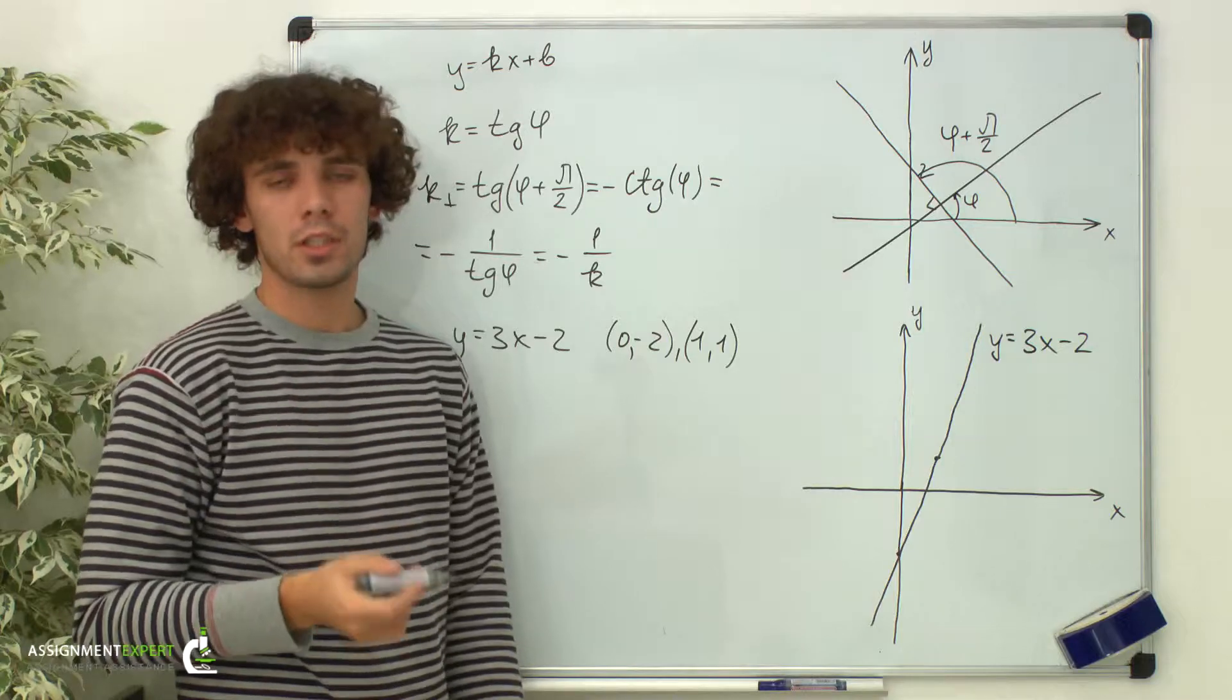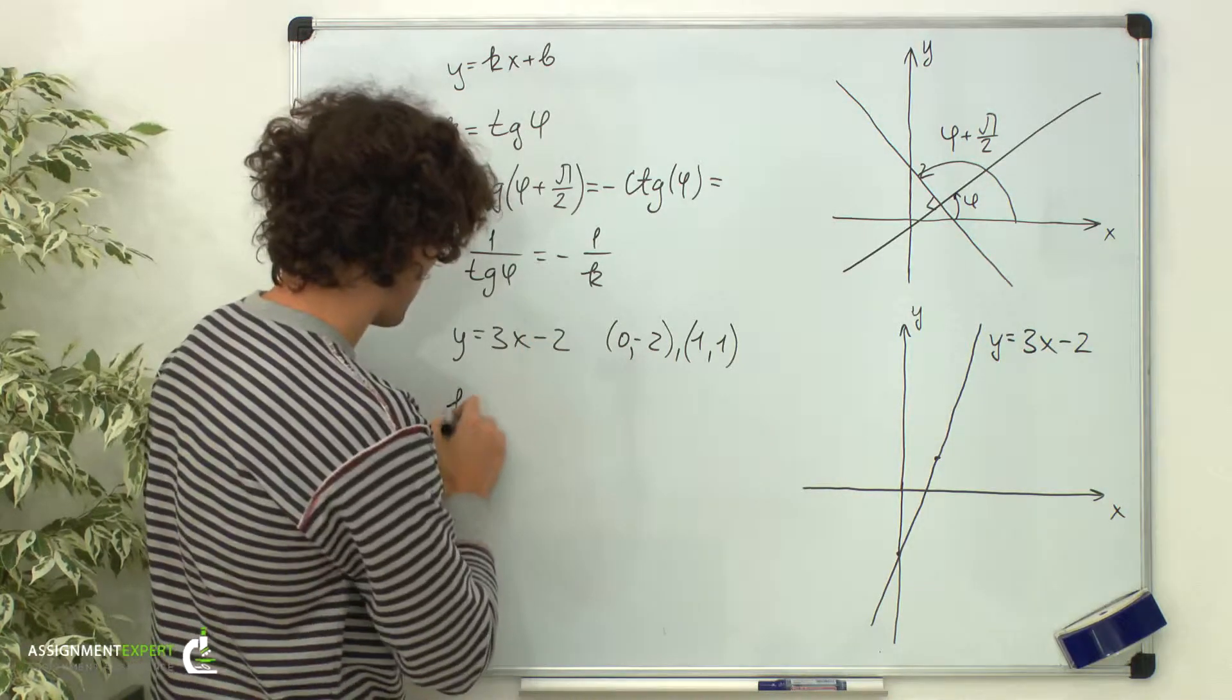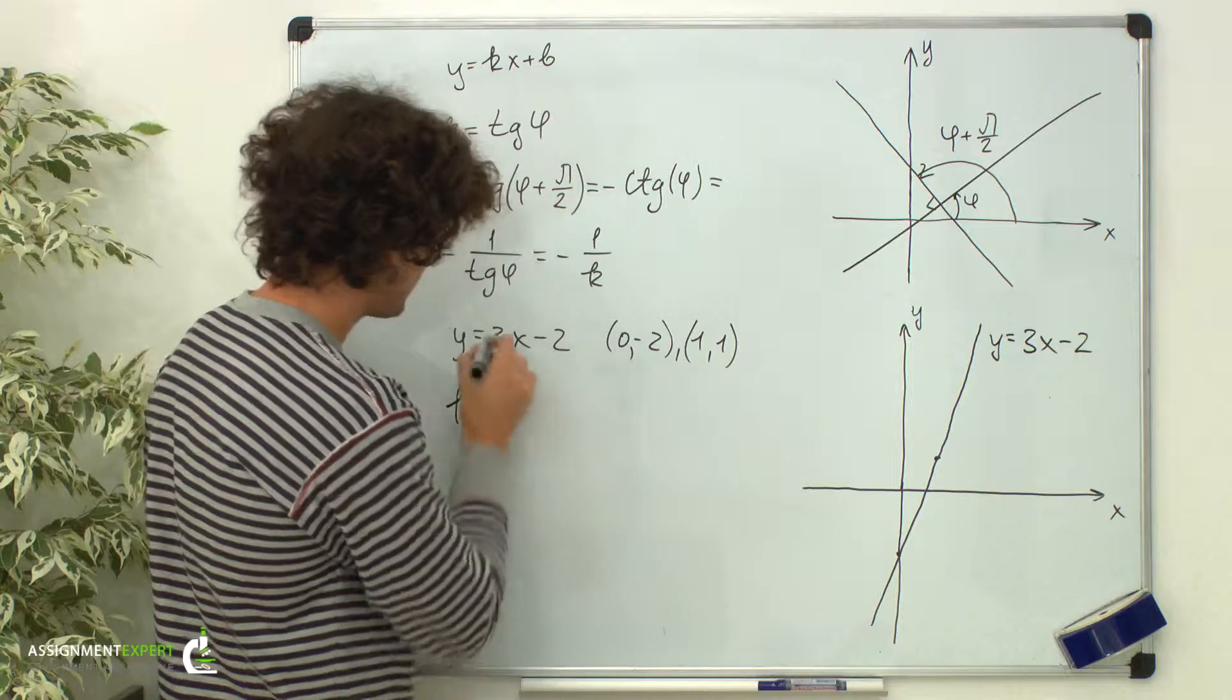The slope of the perpendicular line, using this formula, equals negative 1 third.